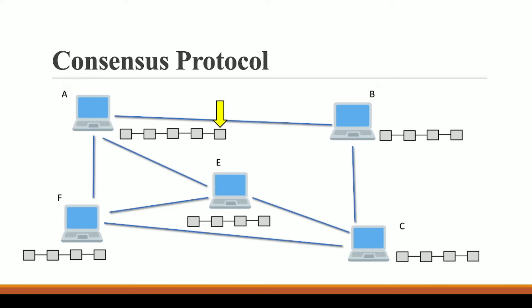But what will happen if A is a hacker trying to add a malicious block at the end of our blockchain? In this case, there are no other blocks right after it, so we cannot use subsequent blocks to detect the issue. B, C, E, and F have only four blocks, while A has added this corrupted block — but B, C, E, F do not know whether this block is correct or not.